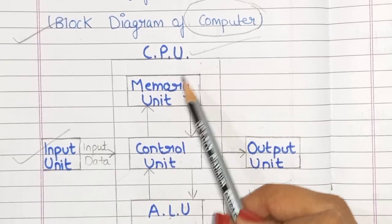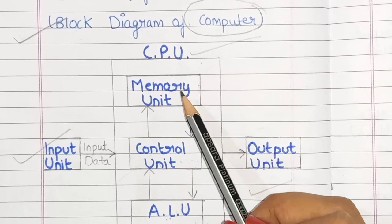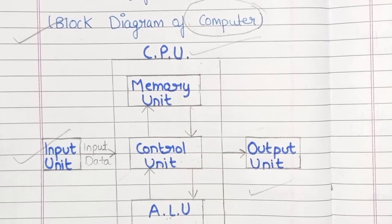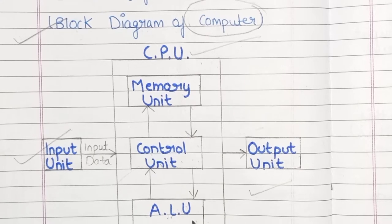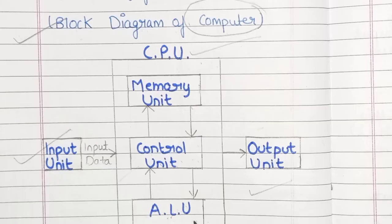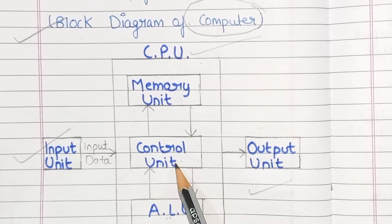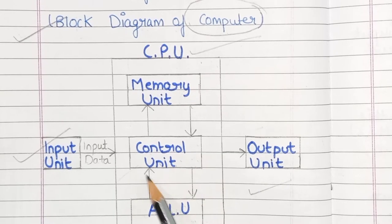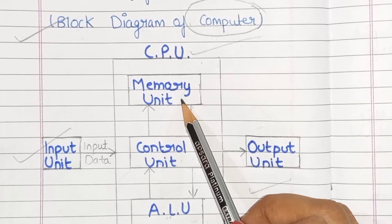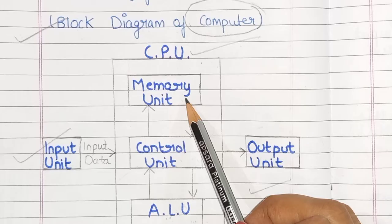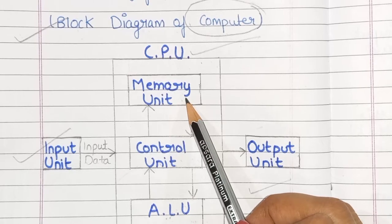The CPU can be divided into three different units: the memory unit, the control unit, and the ALU — arithmetic logic unit. The arithmetic logic unit is where the actual execution of instructions takes place. The control unit controls all the activities of the computer. The storage unit is used to store and retrieve instructions and data, and it is divided into primary memory and secondary memory.